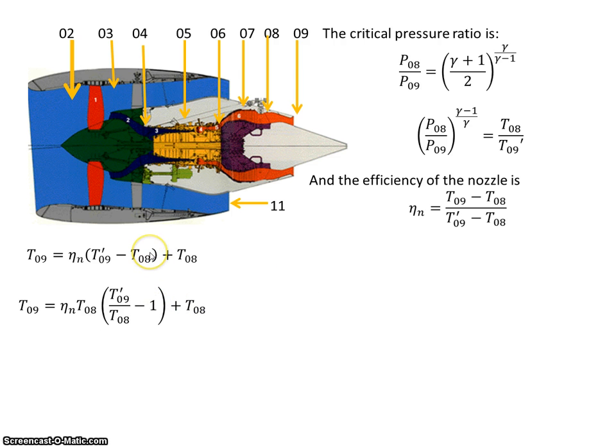I'm going to divide by T8, so that's T9 over T8 minus 1, and I've brought the T8 out.